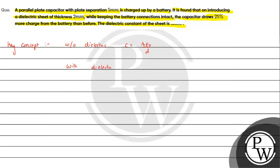When we talk about the dielectric, if it is completely filled, the capacitance C' = A·ε₀·k / d, where k is the dielectric constant. For a partially filled capacitor, the result we need to remember is C'' = A·ε₀ / (d − t + t/k), where t is the thickness of the dielectric sheet.